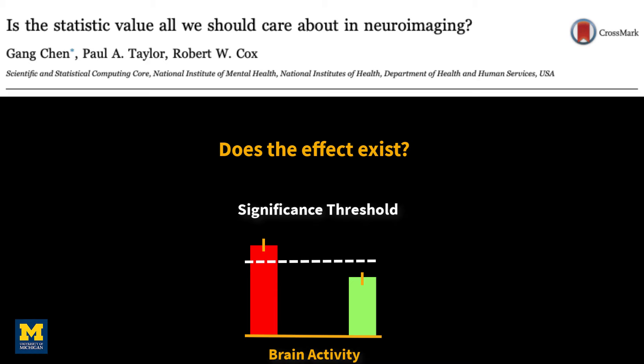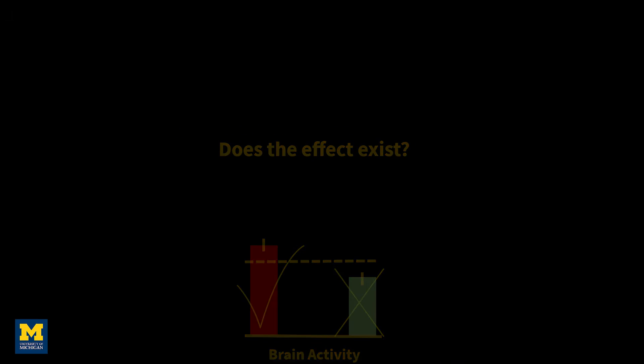However, we should also remember that the commonly used threshold of p equals 0.05 is arbitrary, and that small variations around this threshold can lead to one effect being judged significant and therefore real, while the other is dismissed as non-significant. In other words, just reporting the statistic tells you nothing about the magnitude of an effect and can lead to potentially interesting effects being hidden, as we saw in the previous video on highlighting.